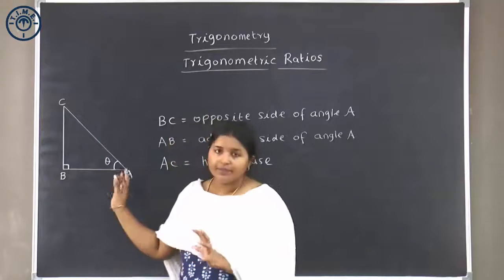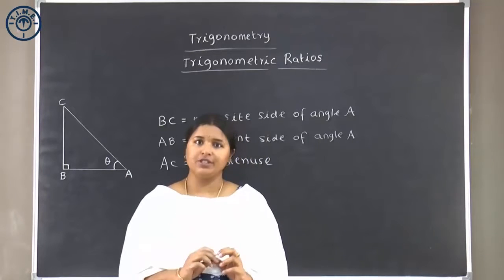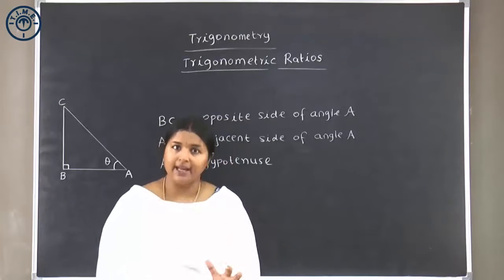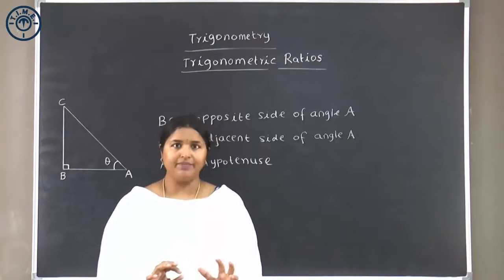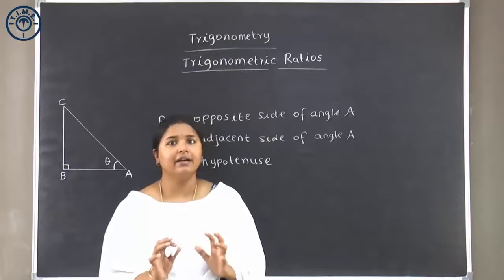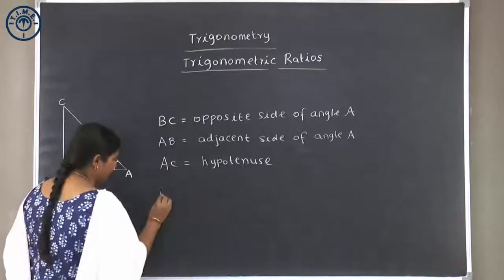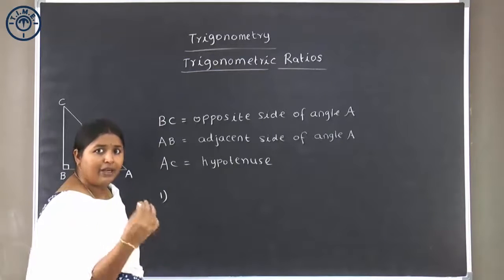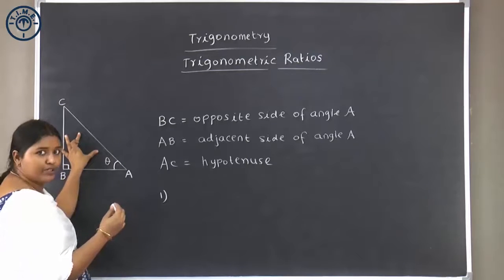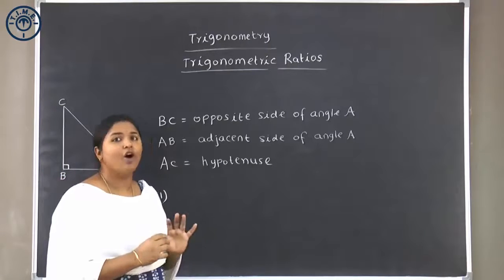In a right angled triangle, we can come up with possibly six ratios using the sides. That is what we are going to look at now, one by one. Trigonometric ratios are nothing but the relationship between the sides and angles of a right angled triangle. The first trigonometric ratio connects the opposite side and the hypotenuse. BC divided by AC is termed as sine of angle A.